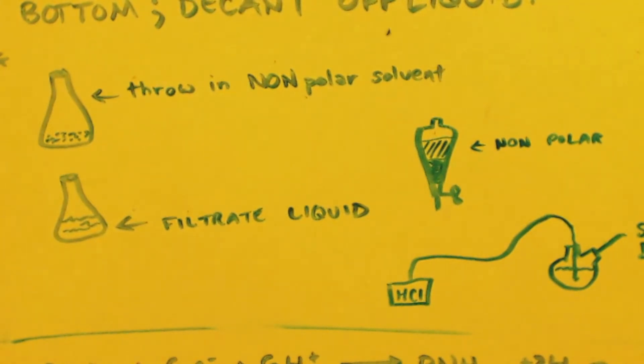Then drain out the water and save it. Drain out the five milliliters of your non-polar solvent and put it with your mother liquor. Throw the water back in there. Repeat that process like five times. Get all the methylamine out. Then you're done.